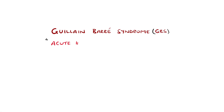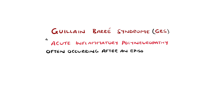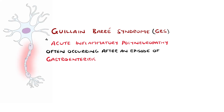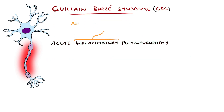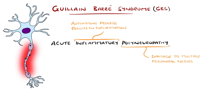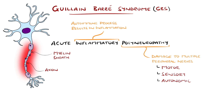Guillain-Barré syndrome is an acute inflammatory polyneuropathy, often occurring after an episode of gastroenteritis or respiratory tract infection. It is thought to be an autoimmune condition in which antibodies lead to an immune attack on the myelin of peripheral nerves or the axons of peripheral nerves. In most cases, this involves both motor and sensory nerves and can also affect autonomic nerves as well.